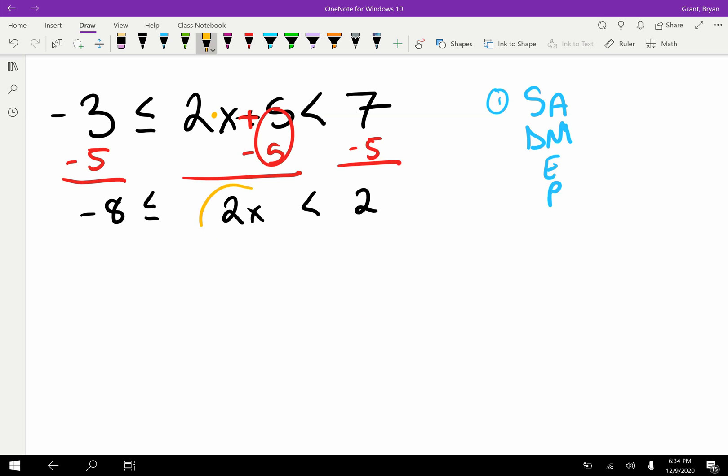On this middle side, is x isolated? No, it's not, because x is still being multiplied by two. So how do we undo multiplying by two? We divide everything by two. These cancel. Technically they make a one x, but we know we don't have to write a one. We just have x isolated.